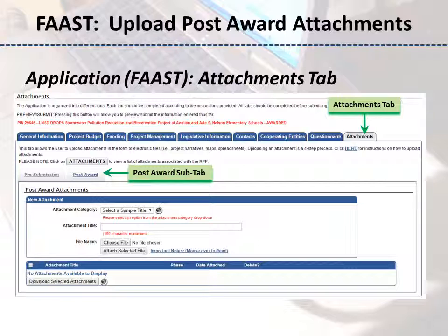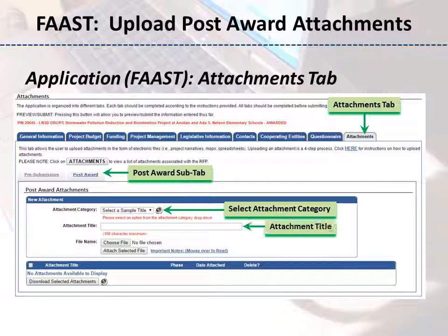For each attachment, select the corresponding option from the Attachment Category drop-down menu. Notice the Attachment Title field is populated based on the Attachment Category selected. The Attachment Title can be edited to reflect multiple files for the same attachment category.